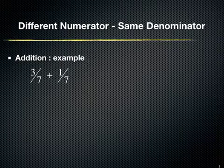To demonstrate addition, I have taken two fractions which are 3 upon 7 and 1 upon 7. When we add two fractions with the same denominator, we simply add both fractions' numerators and keep the denominator as it is.